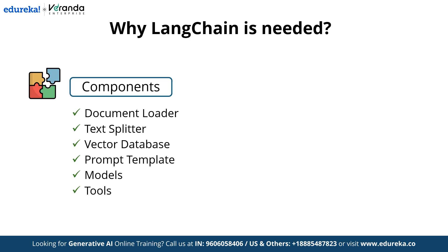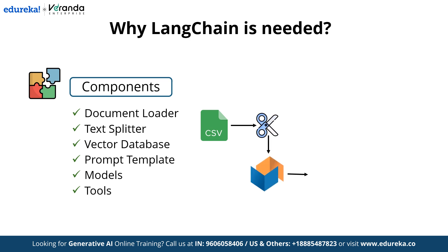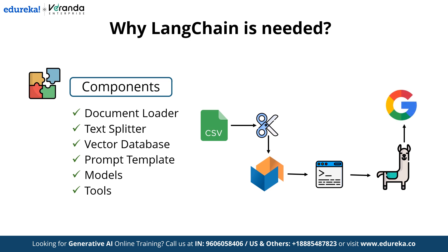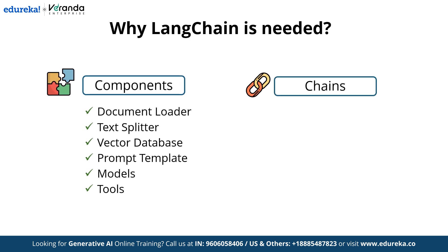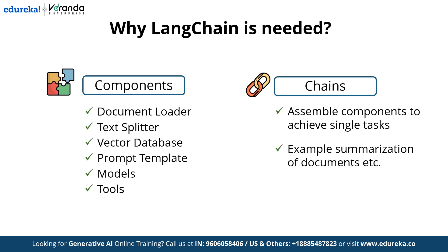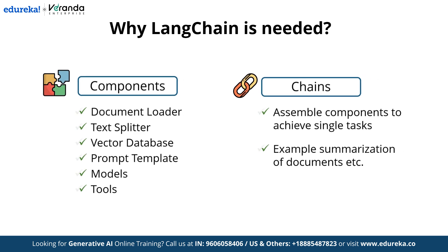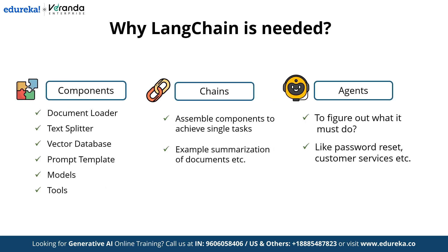Let's visualize this process with a diagram. First, you load a document like a CSV file using a document loader. Then use a text splitter to divide it into smaller chunks, store those chunks into a vector database, and add a prompt template to guide the model. Finally, use an LLM like GPT-4 or LLAMA to perform tasks like searching the web or automating workflows. Langchain also offers chains to help you assemble components to achieve single tasks such as summarization, and agents to figure out what each component must do — like password management, customer services, etc.